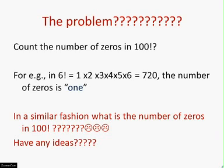The problem is: count the number of zeros in 100 factorial. For example, if we have 6 factorial, it comes to 1 × 2 × 3 × 4 × 5 × 6 = 720. The number of zeros here is 1 because 720 contains only one zero. In a similar fashion, how will a person find the number of zeros in 100 factorial? Any ideas in solving this problem?